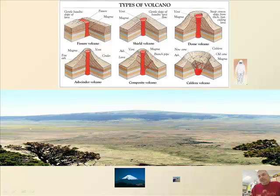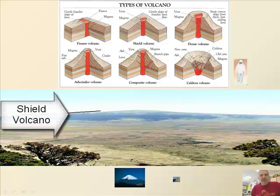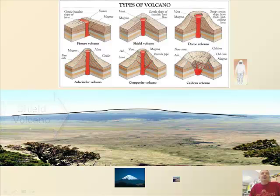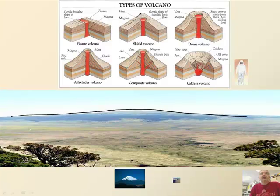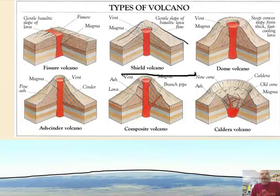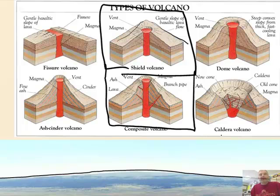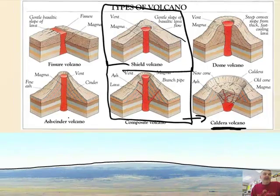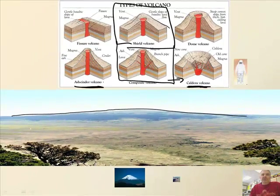Looking at the types of volcanoes in more detail: shield volcanoes have nice gentle slopes as seen in the image. Then there's the fissure volcano. The two main types to focus on are shields and composites — notice how steep the composite is. There's also the caldera volcano, which is a composite volcano that blew up and collapsed. There are also dome volcanoes and ash and cinder volcanoes, which we'll discuss shortly.